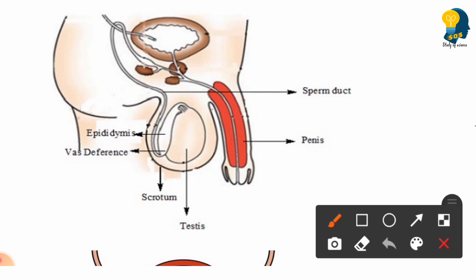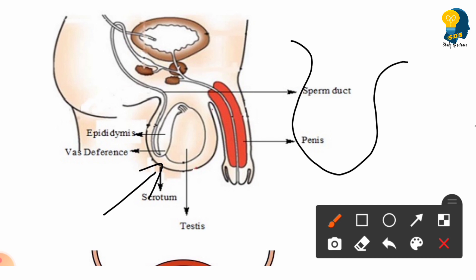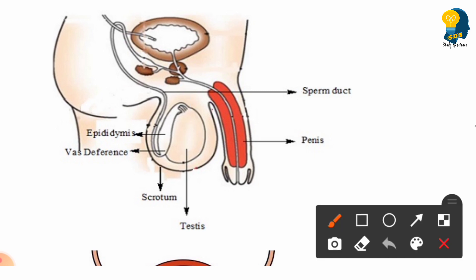Moving to the next part, which is called the scrotum. This region is a sack-like structure that holds the testis — you can observe the testis is present inside the scrotum. The next part is the vas deferens, which is a tube-like structure that helps to pass the sperms.